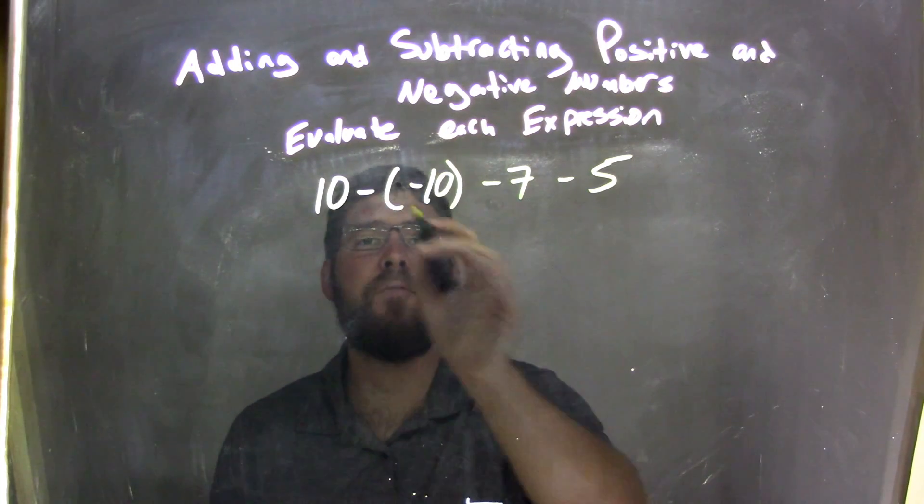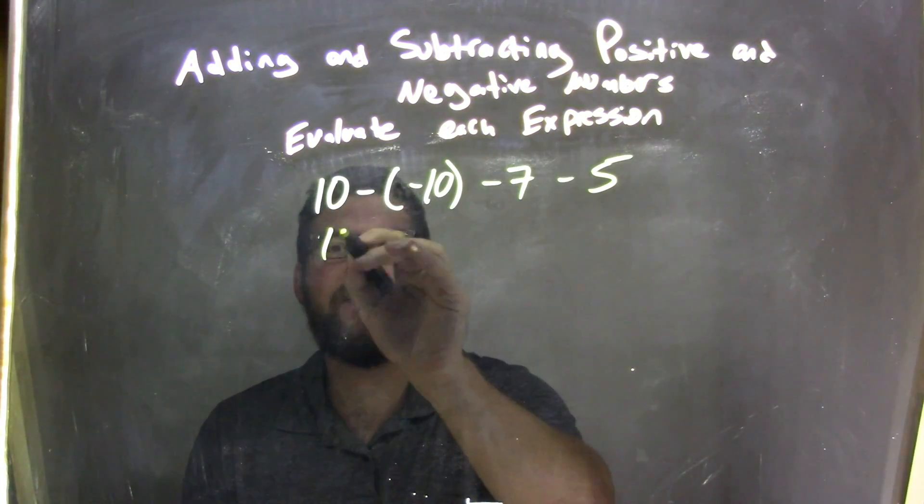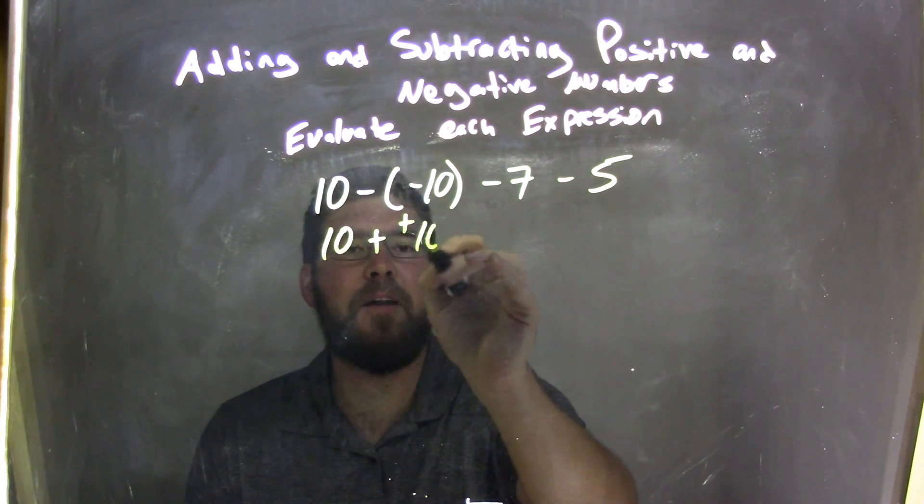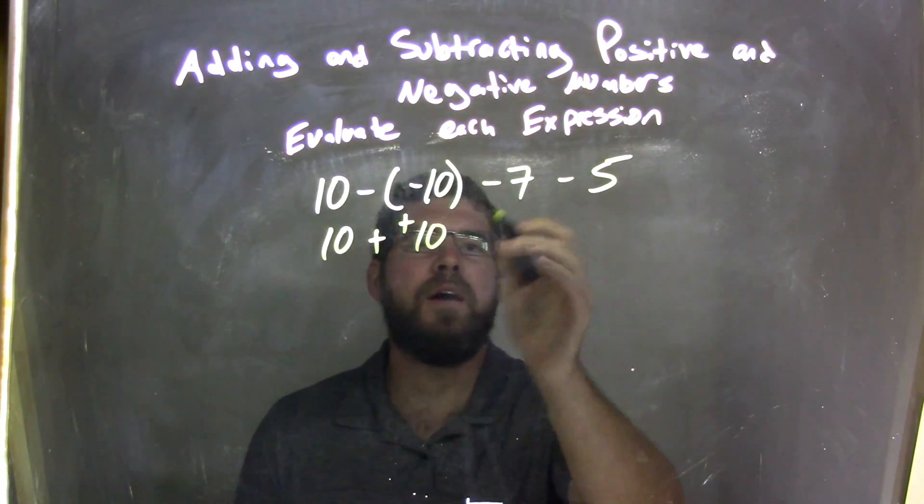Right here I see 10 minus negative 10. I'm going to write that as 10 plus a positive 10, because two negatives make a positive.